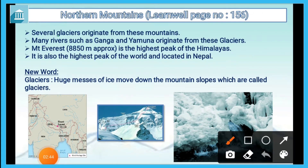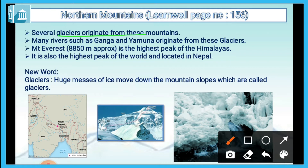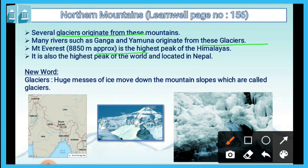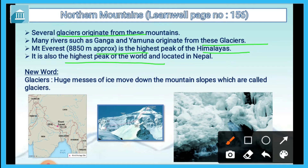Several glaciers originate from these mountains. Many rivers such as Ganga and Yamuna originate from these glaciers. Mount Everest, approximately 8,850 meters, is the highest peak of the Himalayas. It is also the highest peak in the world and is located in Nepal.